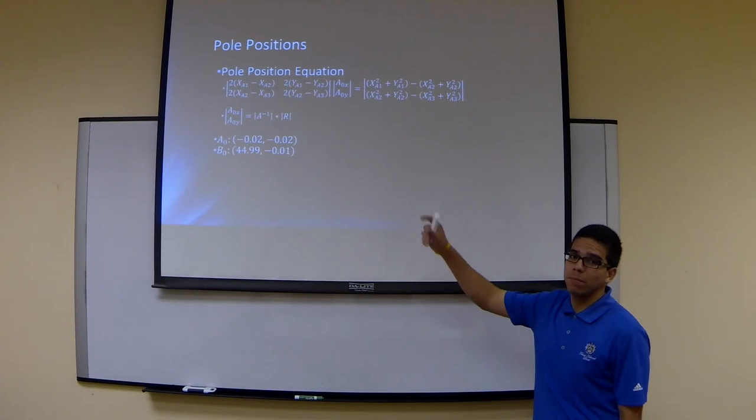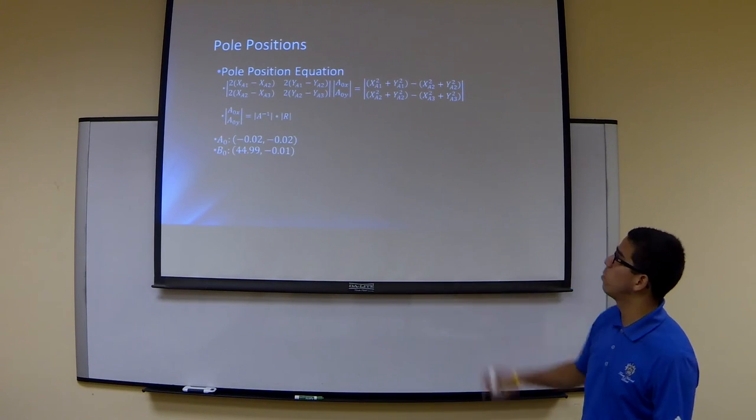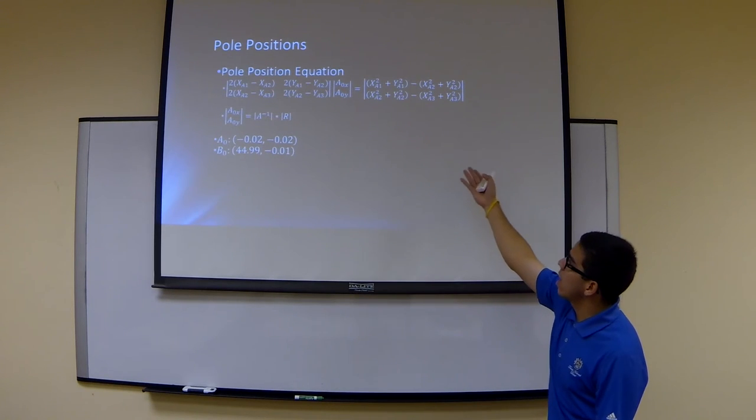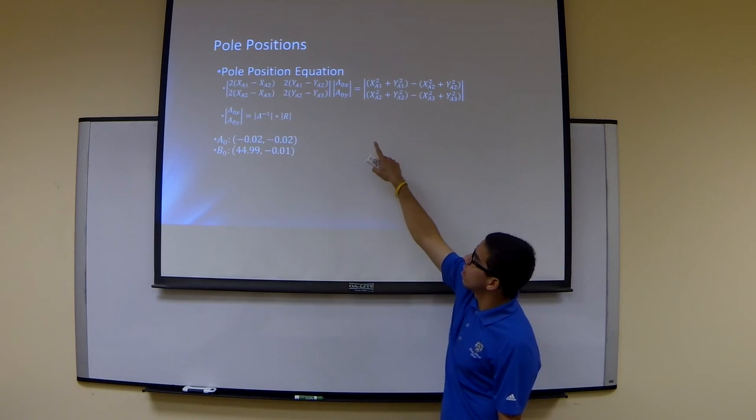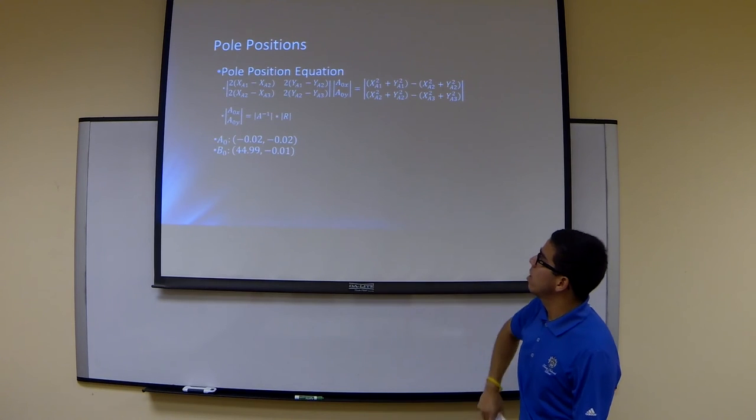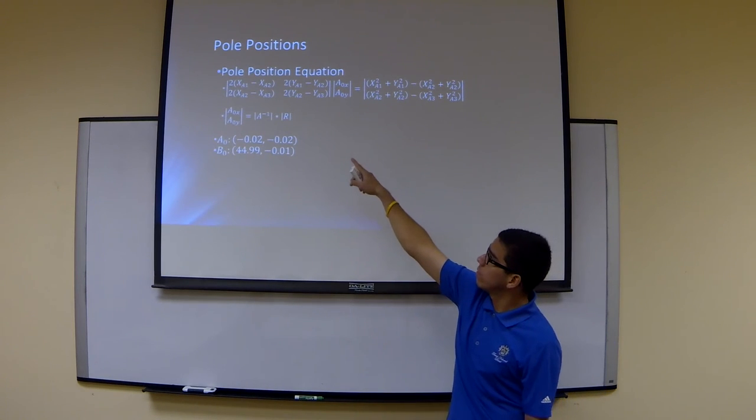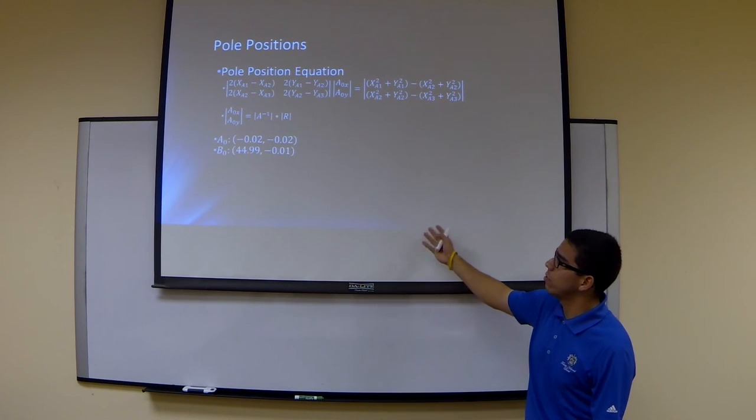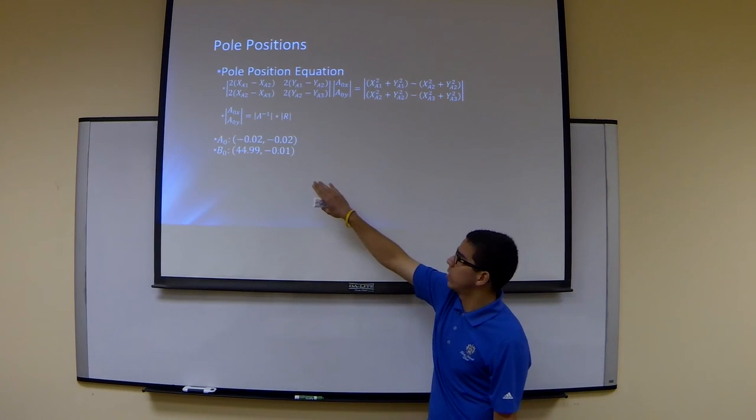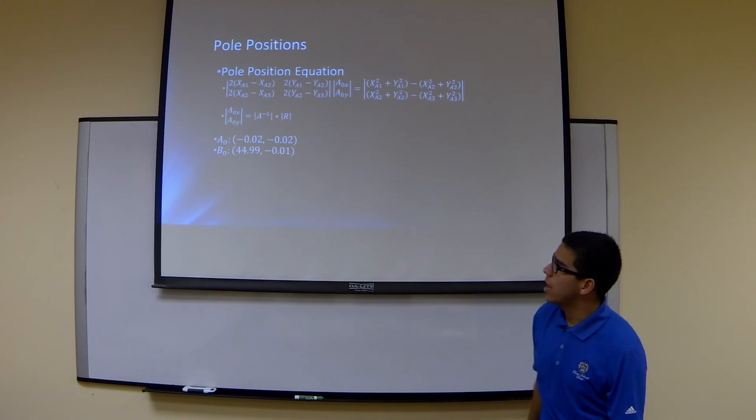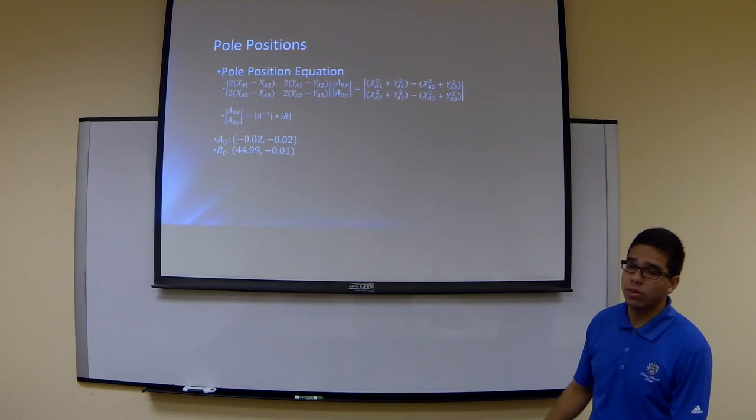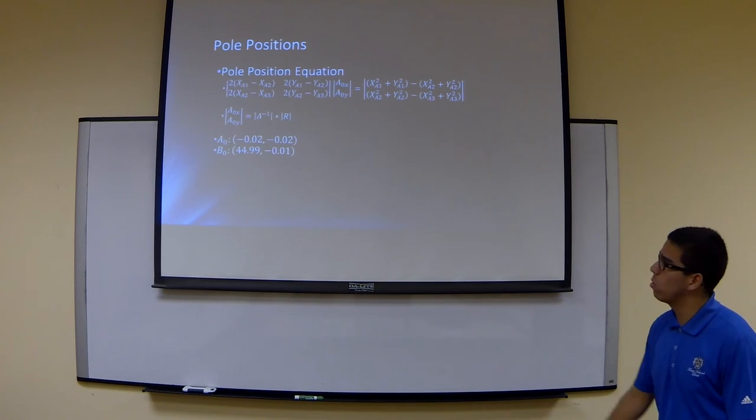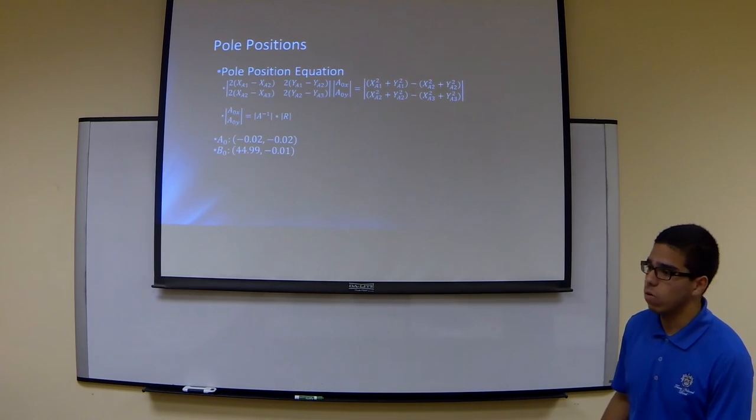So for the first step of the 4-bar synthesis, you have to first solve for your pole positions. So you set up this matrix equation, and you have to solve for this unknown A0x and A0y. So first you have to find the inverse of the first matrix, and you multiply it by the resultant matrix. And the answer you'll get from that are your pole positions. And for our A0, we got negative .02 and negative .02. And then for B0, we got 44.99 for the x-coordinate and negative 0.01 for the y-coordinate.